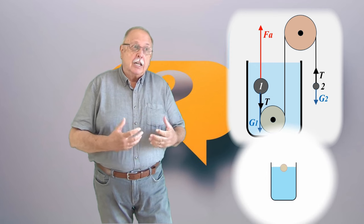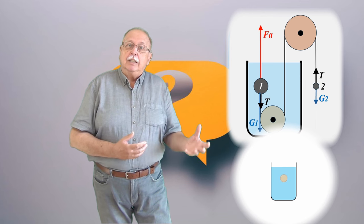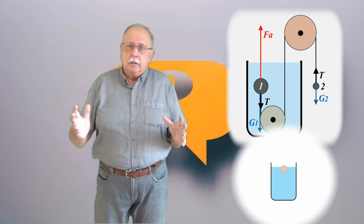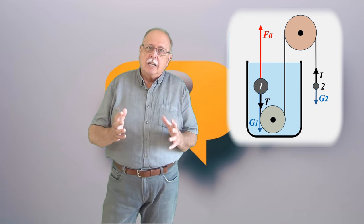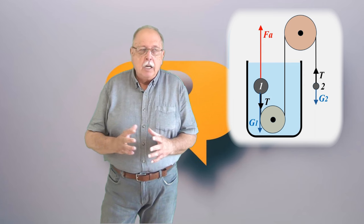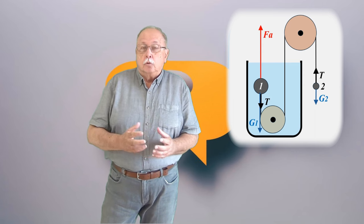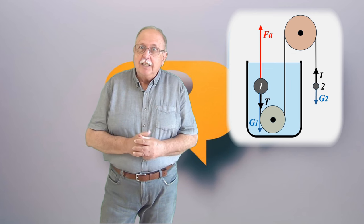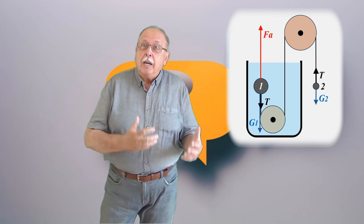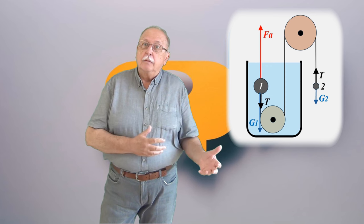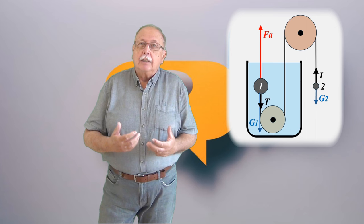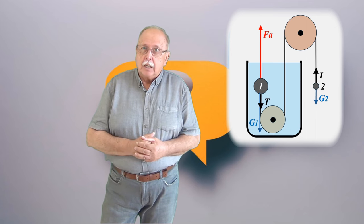De unde vine energia necesară ridicării bilei? Dacă avem un sistem mecanic izolat, în care avem doar energii potențiale gravitaționale, și la un moment dat un corp începe să urce, ca în cazul pe care tocmai l-am descris, înseamnă că un alt corp trebuie să coboare. Altfel, ar crește energia sistemului și ar fi încălcată legea conservării energiei.